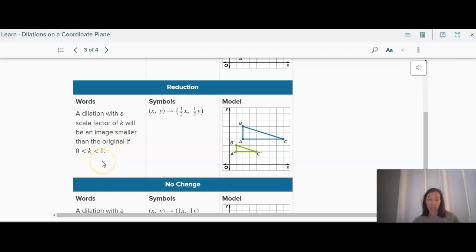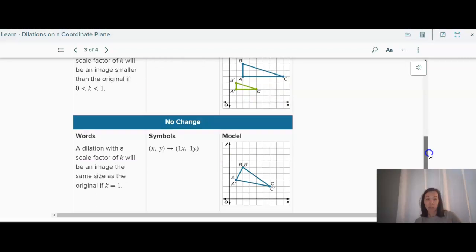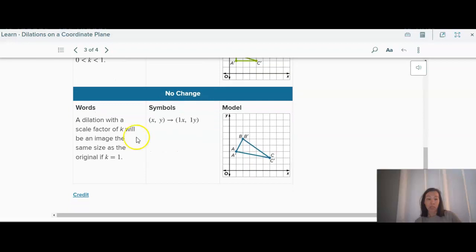Then it's like half the size of the original. And a dilation with a scale factor of k is the exact same. The original and the image, the pre-image and the image will be the same thing. So not too much to think about there.